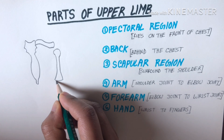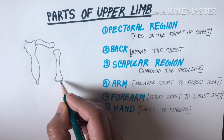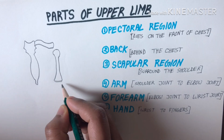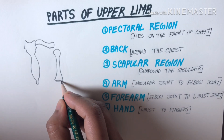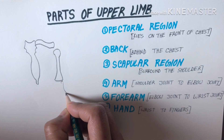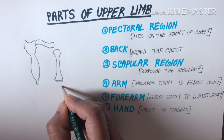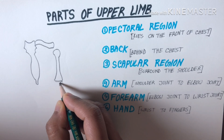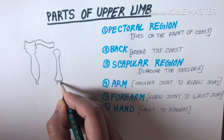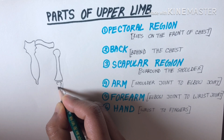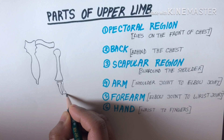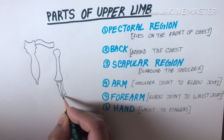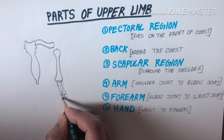One more thing — normally from shoulder to finger we call it the hand, but in medical language it's not the same. In medical language, from the shoulder joint to the elbow joint we call it the arm, and from the elbow joint to the wrist joint we call it the forearm, and from the wrist to the fingers we call it the hand.